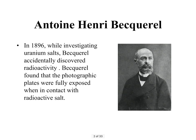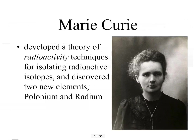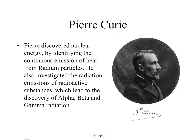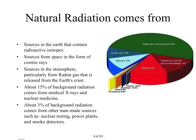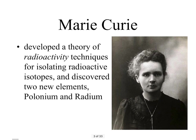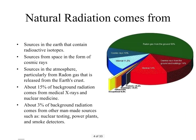All you need to know is the name: Becquerel accidentally discovered radioactivity. Marie and Pierre Curie actually won Nobel Prizes for their work with radioactivity. They discovered new elements that were radioactive, like radium and polonium — so again, just know the names.